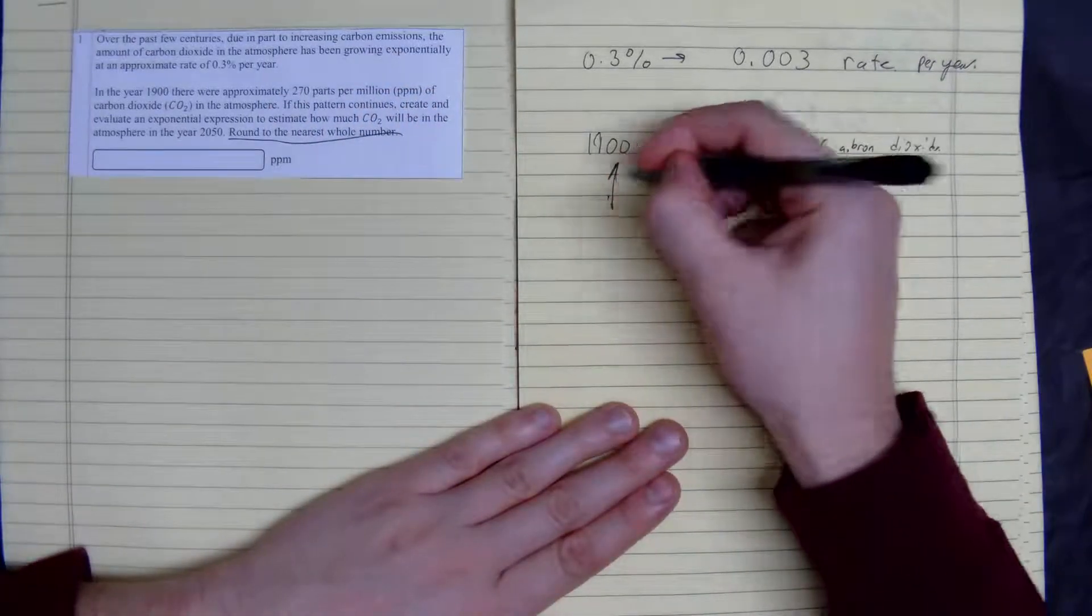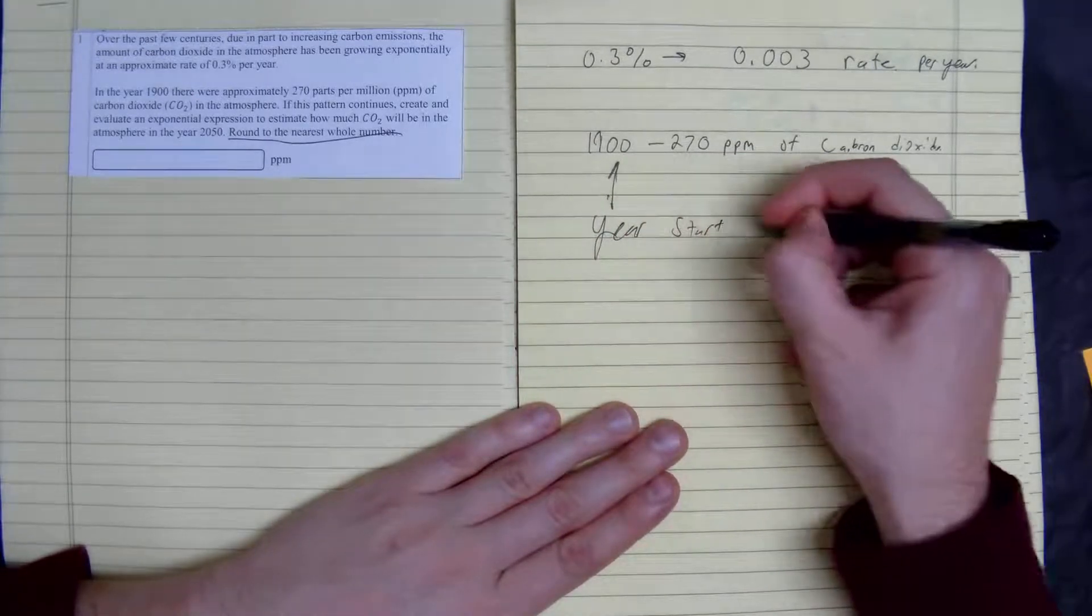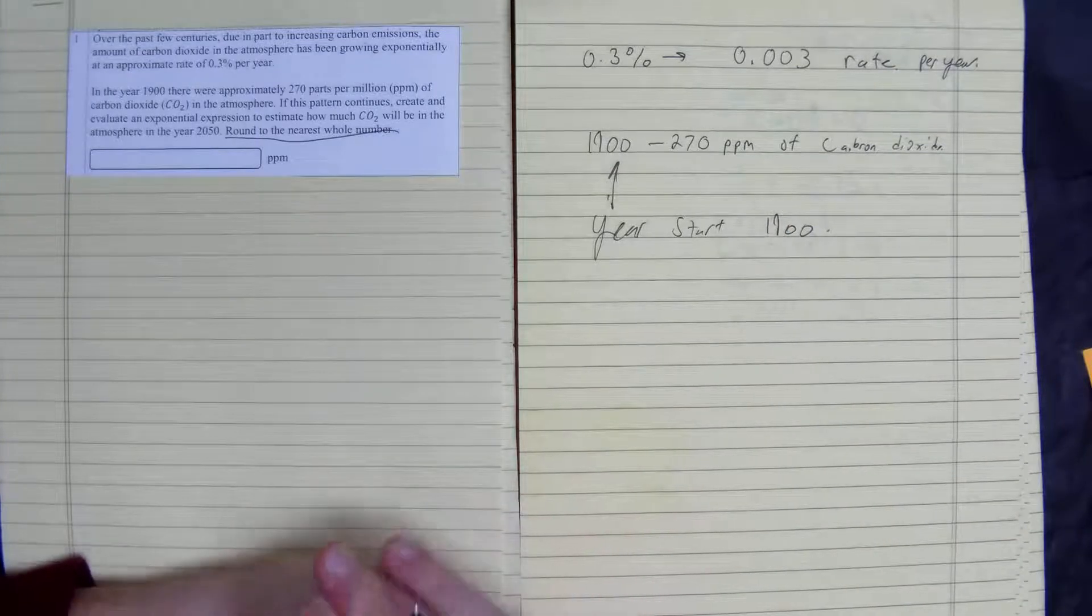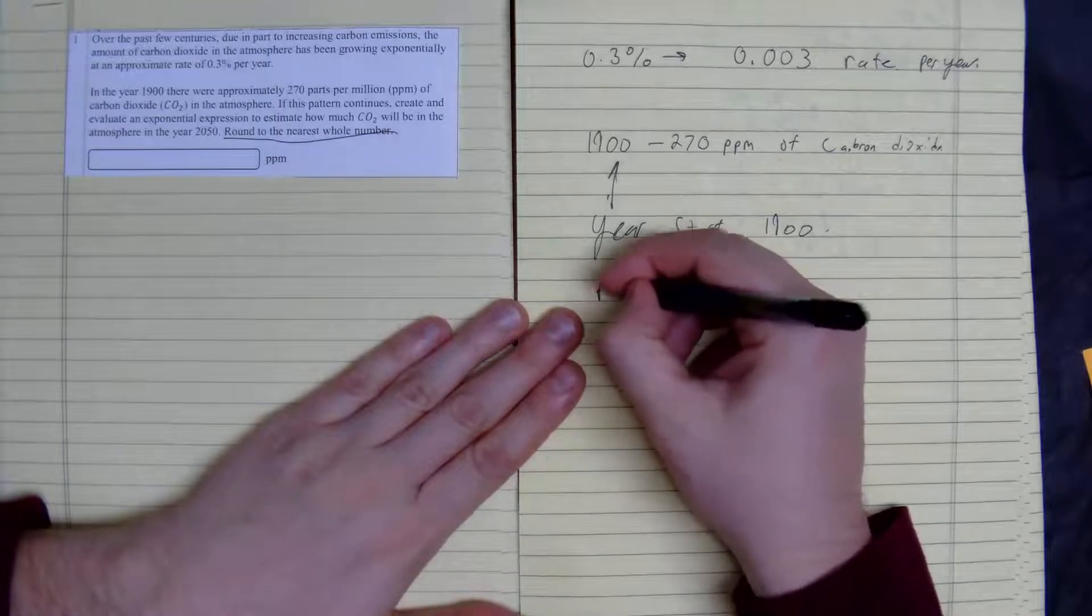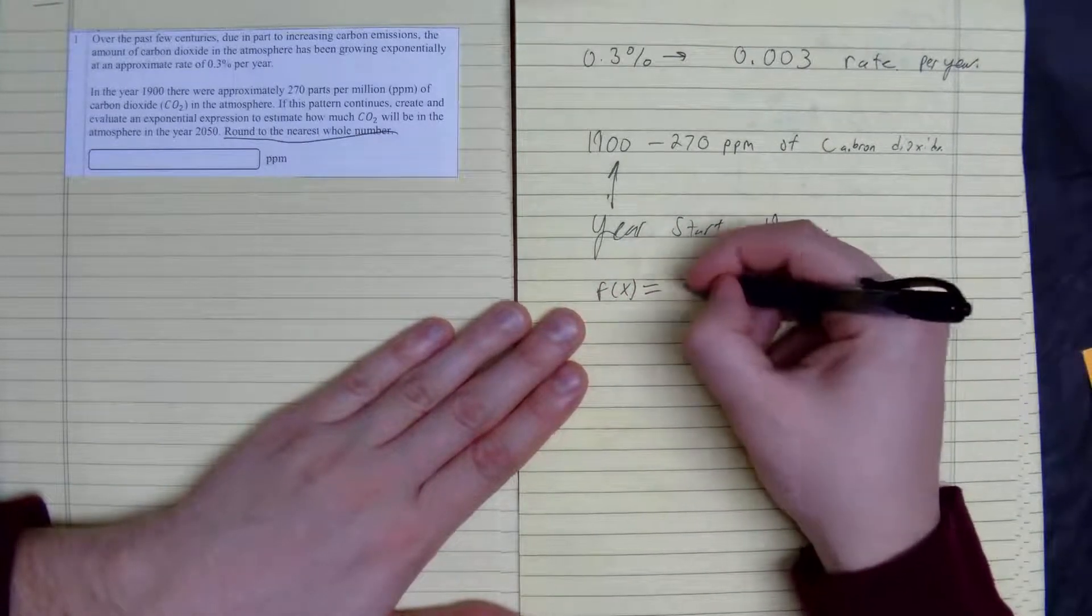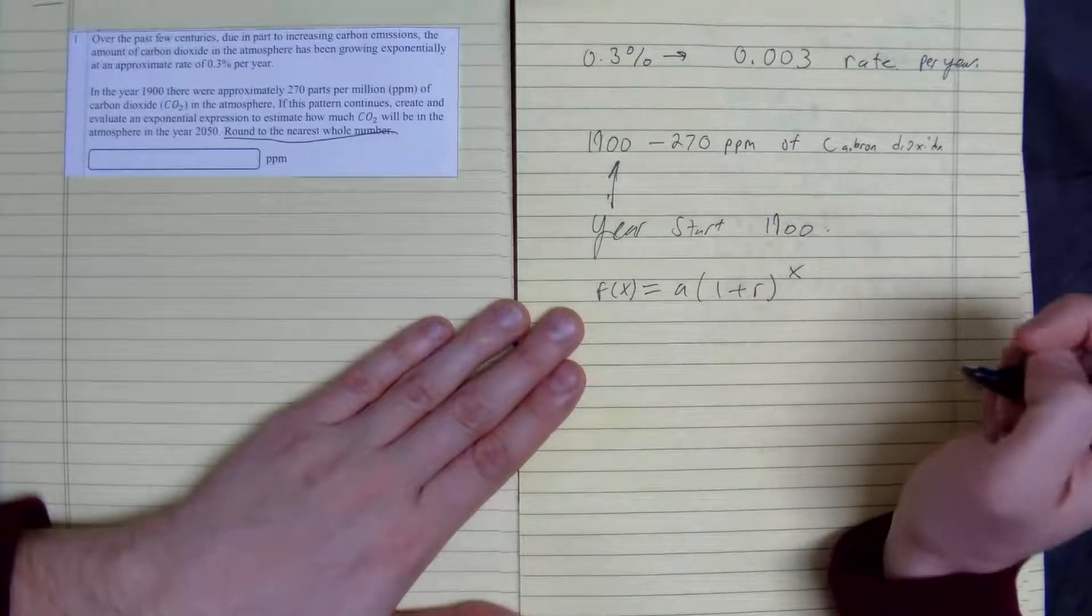So the year we start is the 1900s. So this looks like exponential growth. The formula would be the following: F of X equals our starting point A, times 1 plus our rate to the power of X.